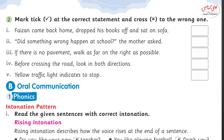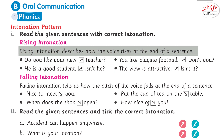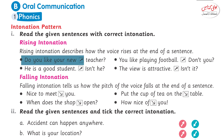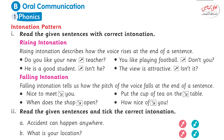Now we will be doing section B, oral communication, and we will be learning about intonation pattern. Intonation is the rise and fall of our voice and we will be learning about rising intonation and falling intonation. Rising intonation means when we raise our voice. For example: do you like your new teacher? You like playing football, don't you? He's a good student, isn't he? The view is attractive, isn't it? At the end of the sentence or where the arrows are, I raised my voice a little bit.